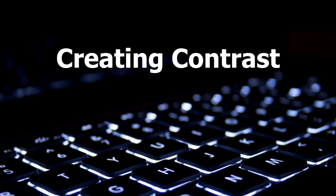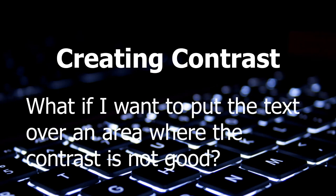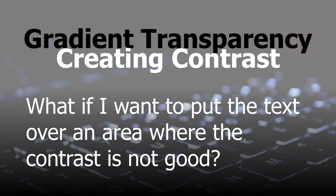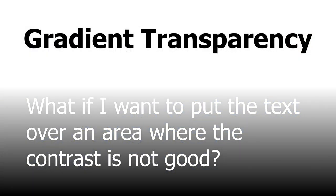If you have a picture that lends itself well to putting text on part of it, but you'd like to put some text over a part where the contrast isn't very good, you can create artificial contrast using the same method — a transparent rectangle — except this time the rectangle uses a gradient. If I take away the graphic, you can see the rectangle I inserted is completely transparent at the top and not transparent at all at the bottom.